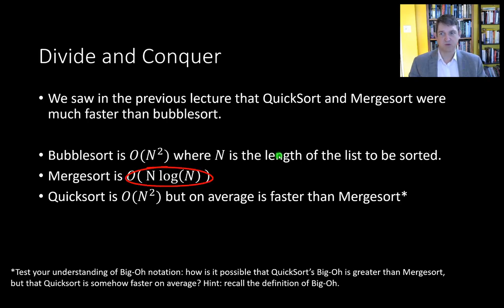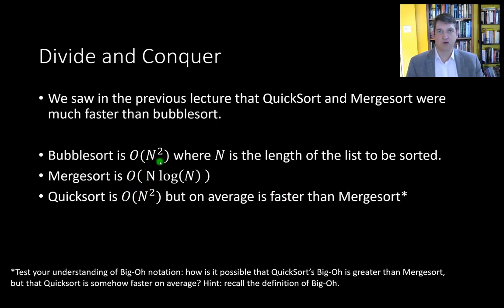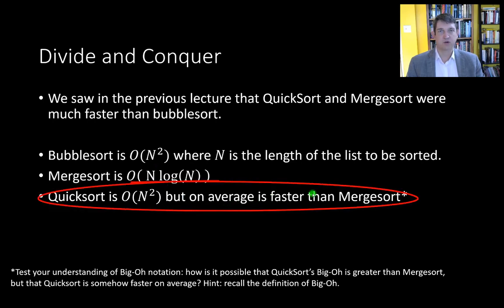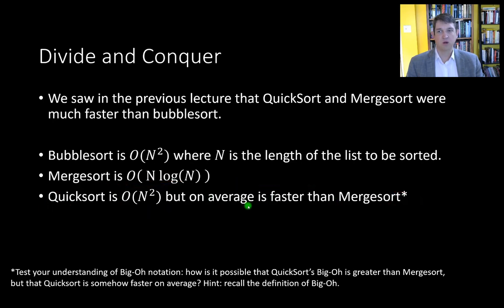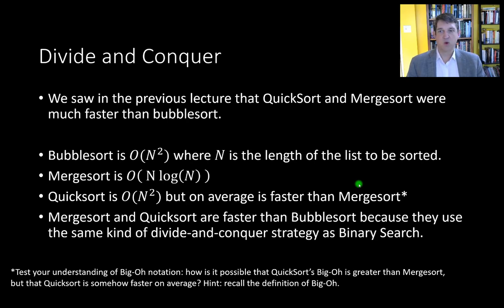The growth time with respect to problem size grows much more slowly for merge sort and quick sort. We discussed how quick sort, even though its worst case behavior is n squared just like bubble sort, is on average faster than merge sort. I want you to think about the definition of what big O means versus what average means.